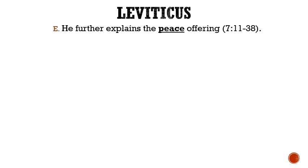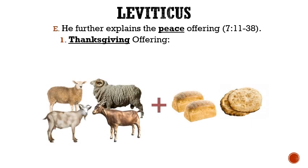Letter E: The Lord further explains the peace offering. There were three different types of peace offerings. The first was known as the thanksgiving offering. If it was a thanksgiving offering, then in addition to an animal sacrifice, it was also to be made with unleavened cakes mingled with oil, fine flour, and fried, as well as with unleavened bread.